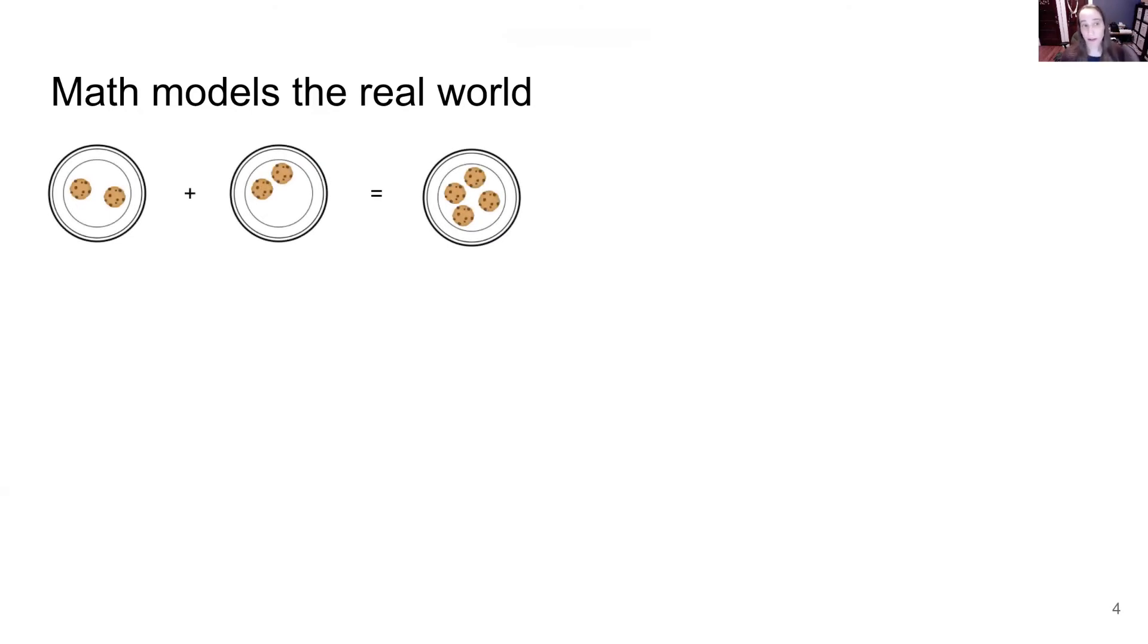So if you have a real world situation in which you have two cookies and then you receive two more, now we have four cookies. And we have a mathematical operation for expressing that so that we can calculate these values, very large numbers, so that I don't have to do it with my eyes and my fingers pointing at it.